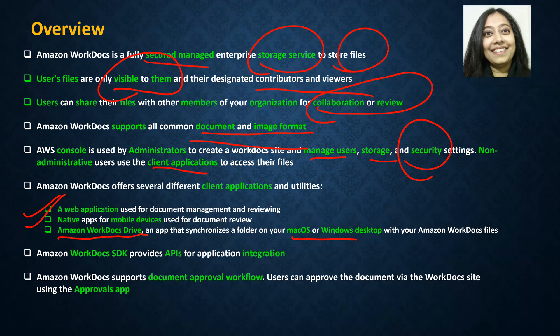It also has an SDK, and this particular SDK provides APIs for application integration. Amazon Workdocs also supports document approval workflows, and users can approve these documents via the Workdocs site. In that Workdocs site, there is an approvals app — it's basically one of the options available there.